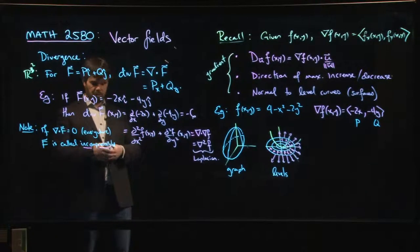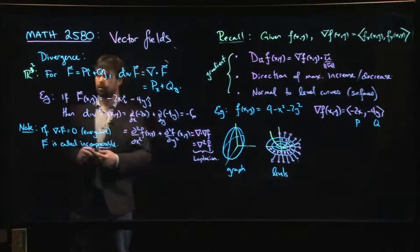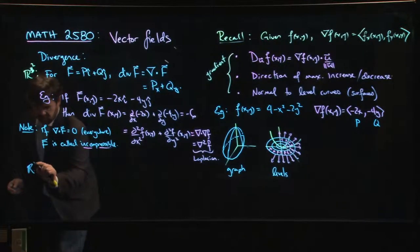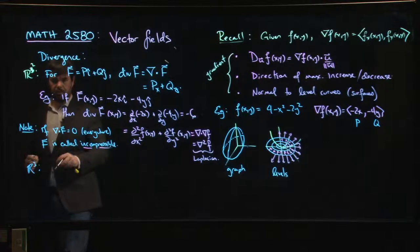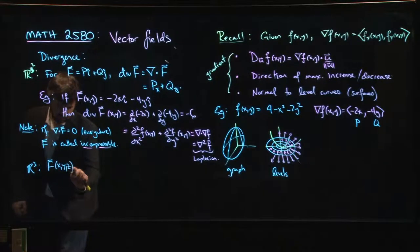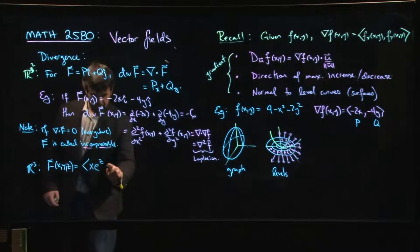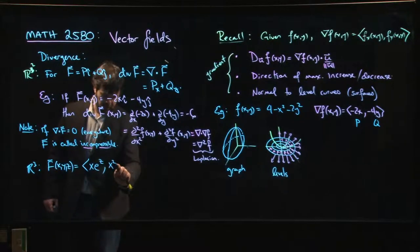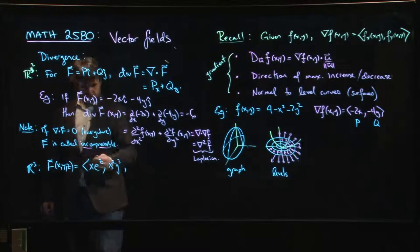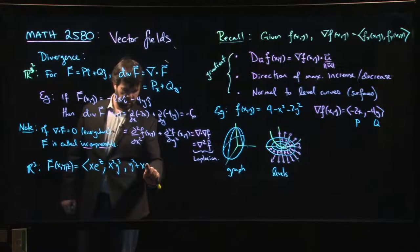Now, let's end with one more example and then we're going to move on to curl. Let's just do some random example in R3. We won't worry too much about what this means, we'll just do an example. So in R3, let's take f of x, y, z to be x e to the z, x squared y cubed, and then y squared plus x sine z, something like this.